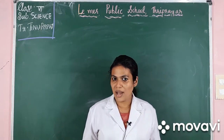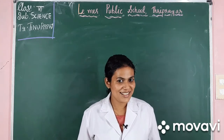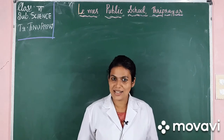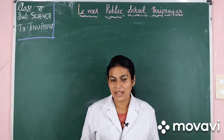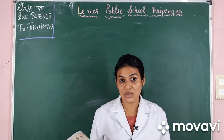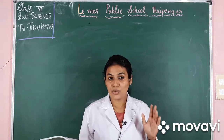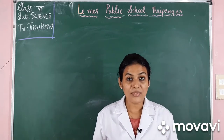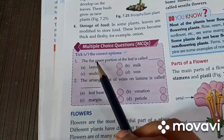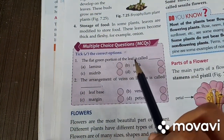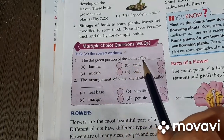I hope all of you understood what I taught you last class, and the teacher gave you homework. So first let's discuss the homework. The homework was to find the answers for multiple choice questions given on page number 64. The teacher will read the question and you have to answer loudly. The first question is: the flat green portion of the leaf is called dash.